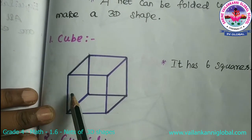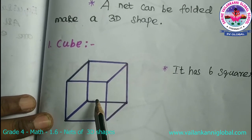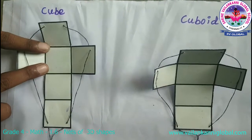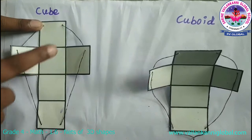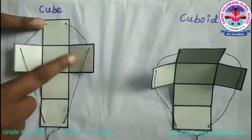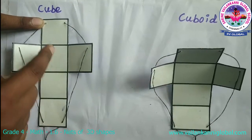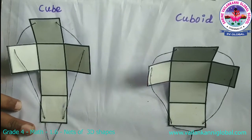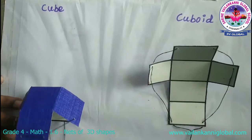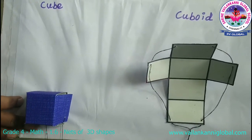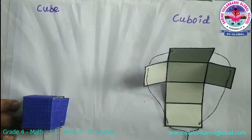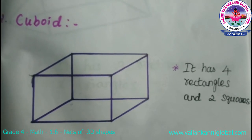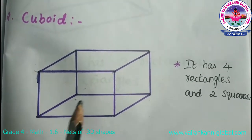The first shape is the cube. It is a solid figure and it has six squares only. This is the net of the cube — here six squares are there: one, two, three, four, five, six. Now I will make a cube with that net. See, this is the 3D model of cube.